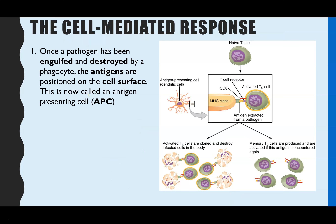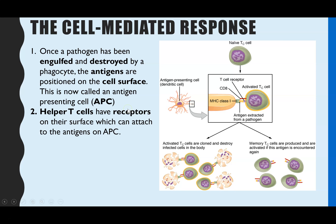Step one: once a pathogen has been engulfed in phagocytosis, the antigens will then be placed on the surface of that phagocyte or macrophage, and that is now an antigen-presenting cell. The helper T cells, which are a type of T lymphocyte, actually have receptors on their surface, and those receptors are able to bind to antigens which are being presented on the antigen-presenting cell.